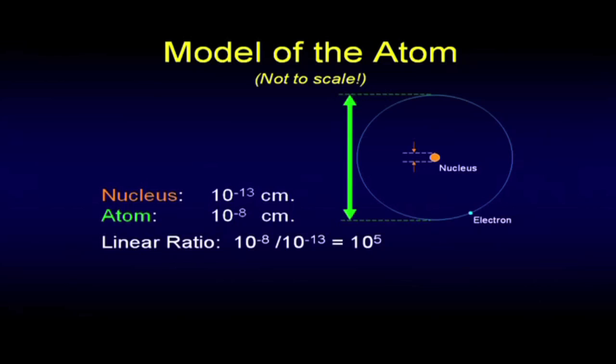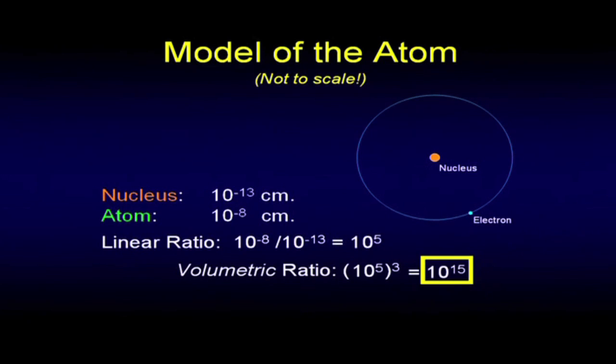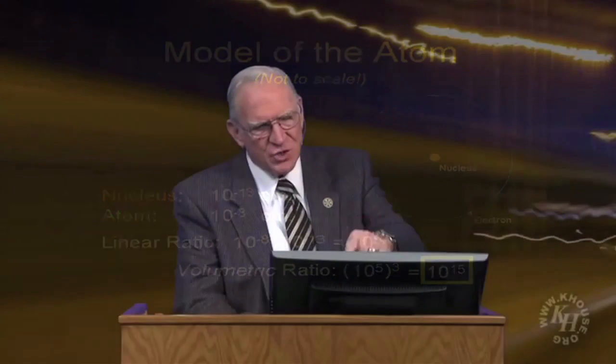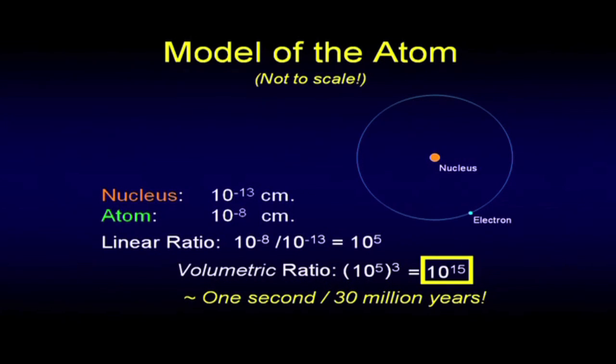Area-wise, you have to square that. Volumetrically, you've got to cube it. So if you take 10 to the fifth and cube it, that turns out to be 10 to the 15th. The relationship of that nucleus to the volume that the atom is taking is the same ratio as one second has to 30 million years.